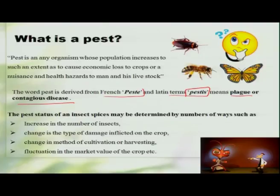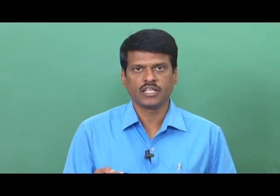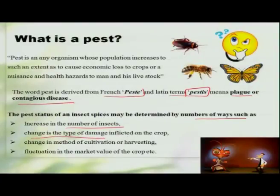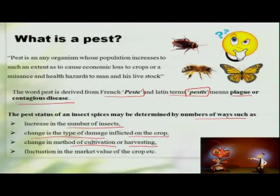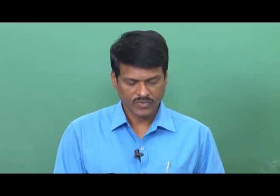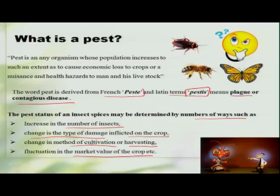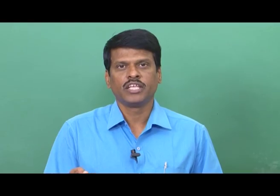The pest status of an insect species may be determined in a number of ways, such as an increase in the number of insects — where insects may suddenly develop, multiply, and grow into a huge population and thus become pests — or by a change in the type of damage inflicted on the crop. For instance, if a pest that is a defoliator shifts its feeding site to fruits, then it becomes a serious pest. Also, method of cultivation or harvesting and the market value of the crop are determining factors — for example, with onion and tomato, even smaller damage caused by an insect may be considered serious when there is high market demand.